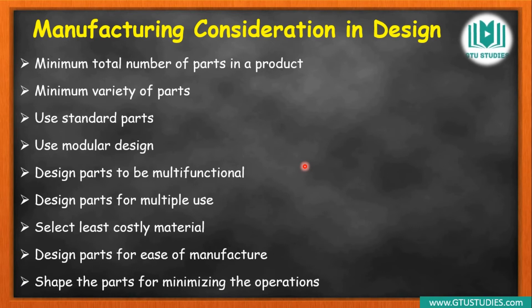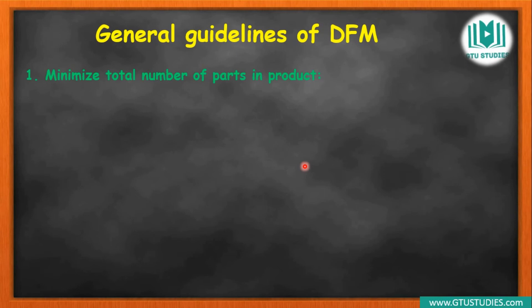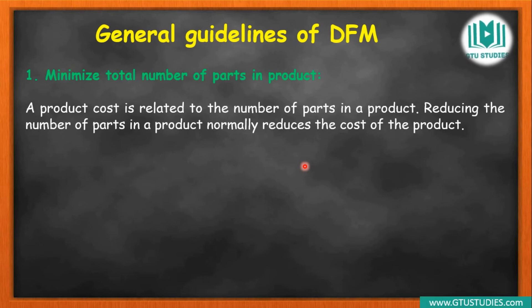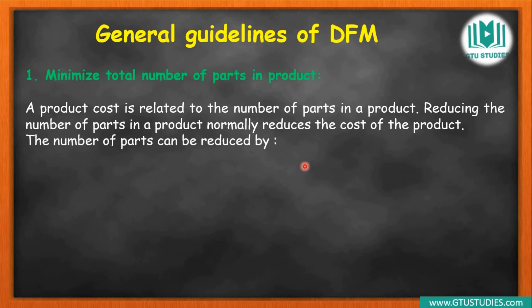Shape the parts to minimize the number of operations — design parts so that fewer operations are needed to reach the final product. Instead of ten operations to finish a product, try to do it in one, two, or three operations. Keep this in mind when designing. These are the basic general guidelines for DFM. First: minimize the total number of parts in the product, so you can easily assemble them, the overall product does not look complex, you can easily use it, and you can easily manufacture it.